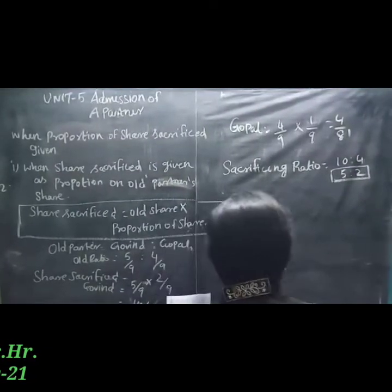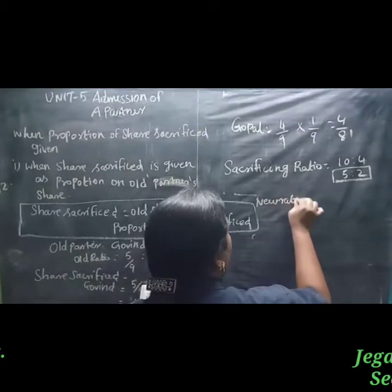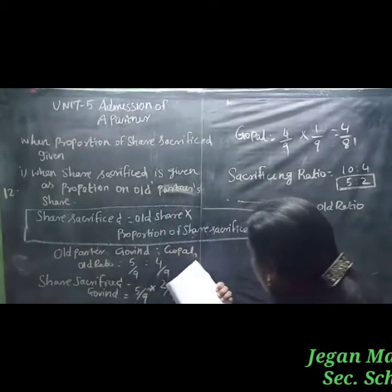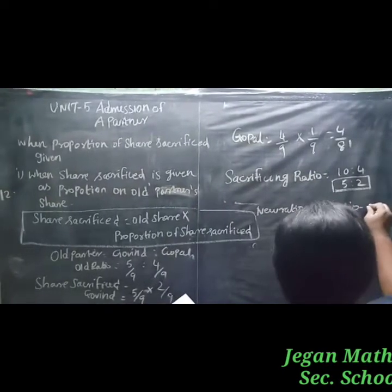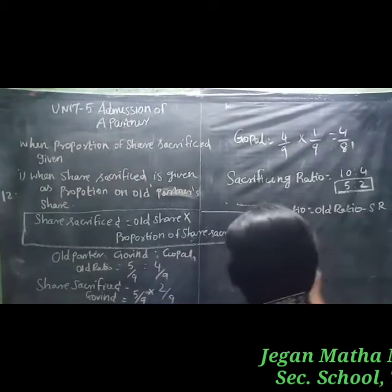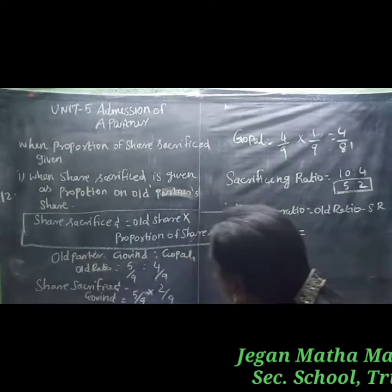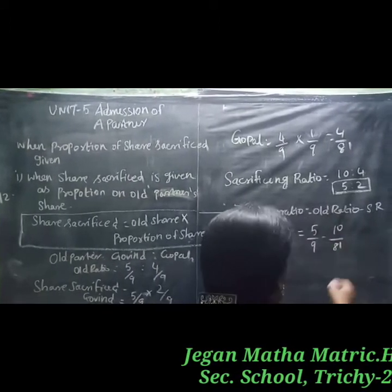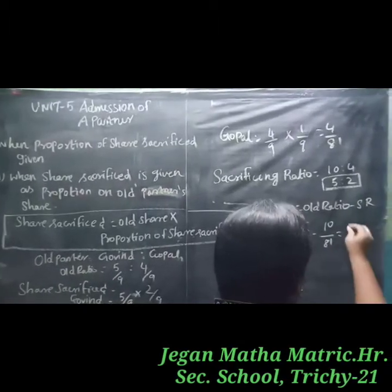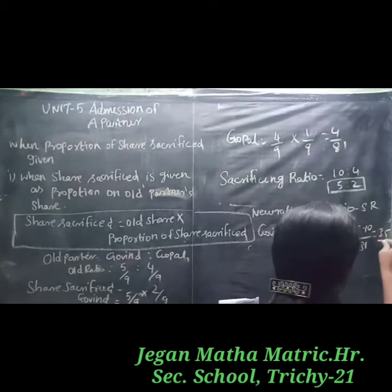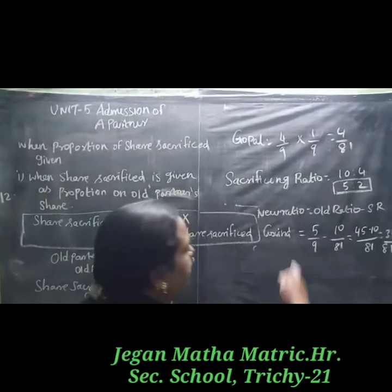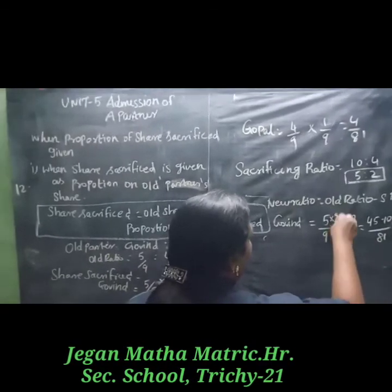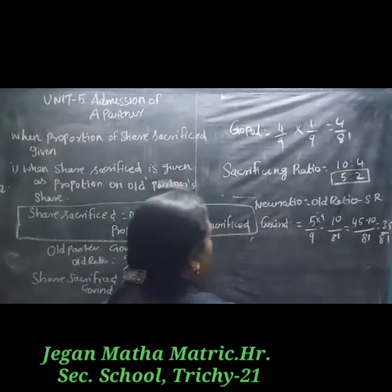Next, find the new ratio. New ratio equals old ratio minus share sacrifice. For Govind: 5/9 minus 10/81. LCM is 81; so 45/81 minus 10/81 equals 35/81. For Gopal: 4/9 minus 4/81 equals 36/81 minus 4/81 equals 32/81.